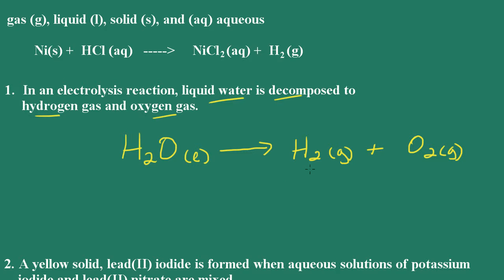We have to check to see if it is balanced. We can look at each atom, and I always leave oxygen until last. On the reactant side I have two hydrogens, and on the product side I have two hydrogen atoms — so we're good. On the reactant side I have one oxygen, but on the product side I have two oxygen atoms, so I have to balance for oxygen. The only way that you can balance is to use coefficients. You put the coefficient in front of the substance — do not change subscripts. If you change a subscript, then you have changed the formula and you have a different compound.